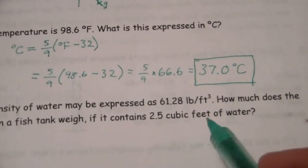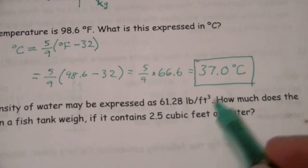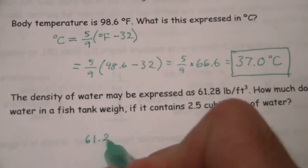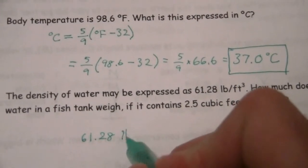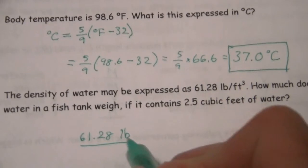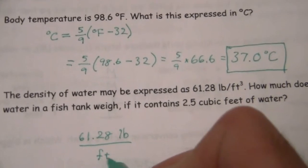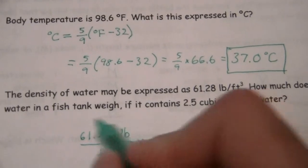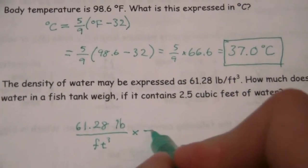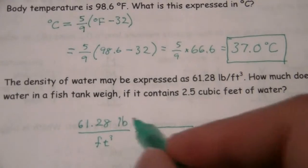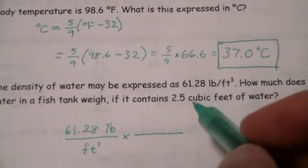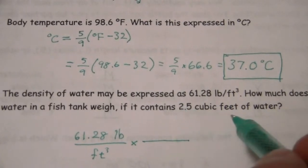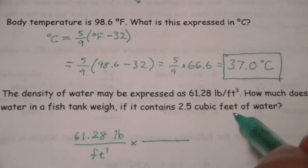So cubic feet, that's what we have there. We have 61.28 pounds per cubic foot, and then that's our engine, if you will. And then the train car that we're attaching to that is simply the 2.5 cubic feet of water.